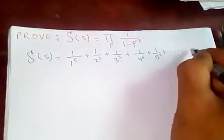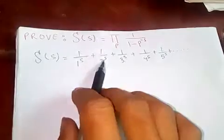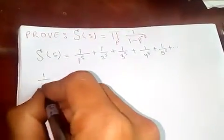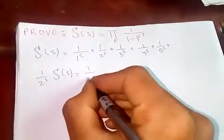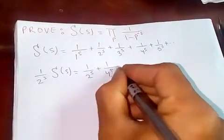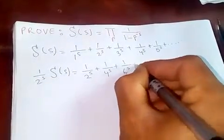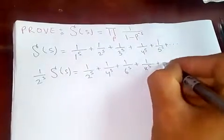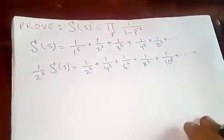Now if I multiply both sides by 1 over 2 to the s, what we're getting is 1 over 2 to the s times zeta of s is equal to 1 over 2 to the s plus 1 over 4 to the s plus 1 over 6 to the s plus 1 over 8 to the s plus 1 over 10 to the s, and so on.